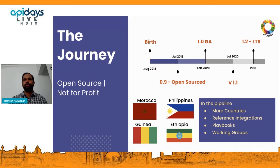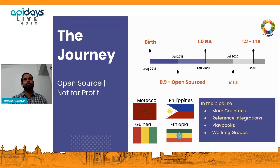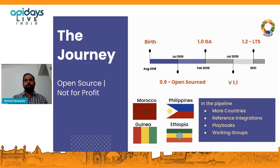With this, we will be catering to roughly 150 million people who would be provided foundational ID through MOSIP in these two countries. Apart from these two countries, we also have Ethiopia and Guinea doing pilots, and there are other countries interested. We are working on creating playbooks of how countries can go live faster and generally helping low capacity countries get up to speed with their identity infrastructure. We are open source and not for profit, and we work with various partners in our ecosystem who take these solutions to the countries.